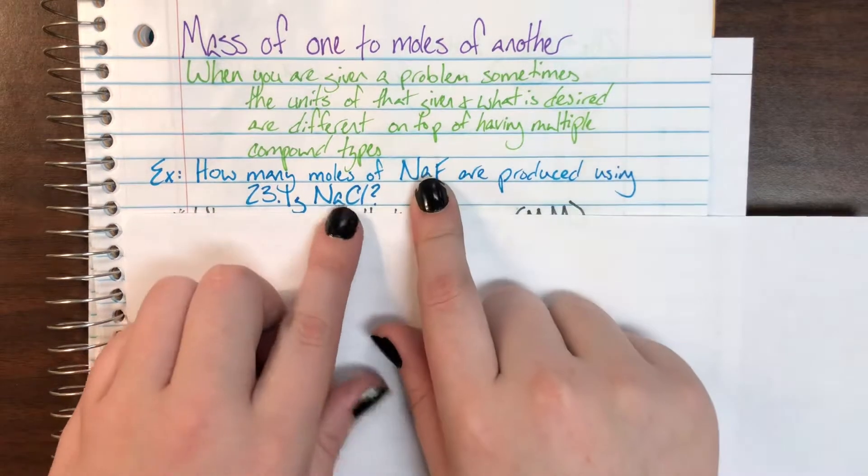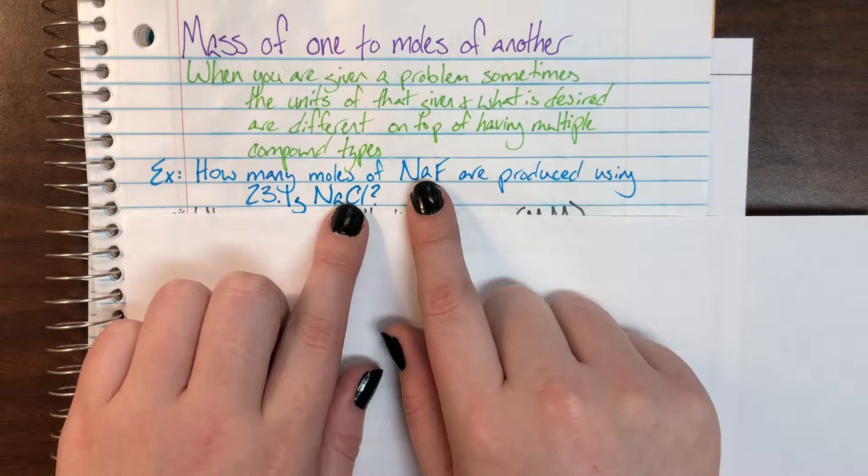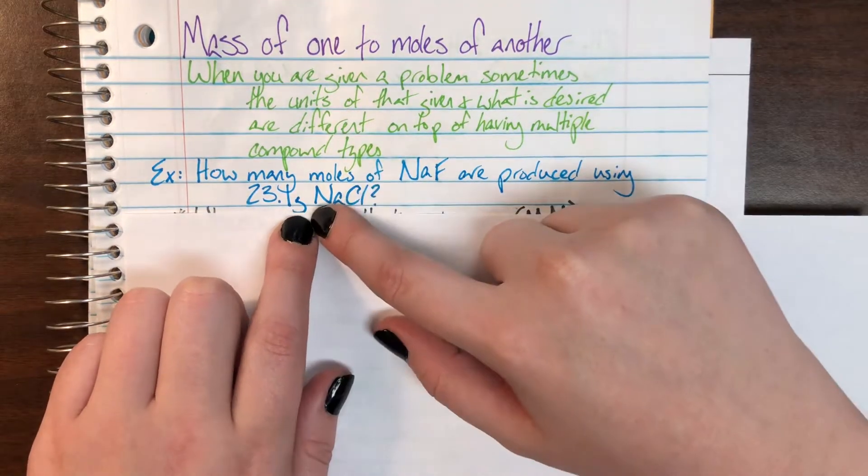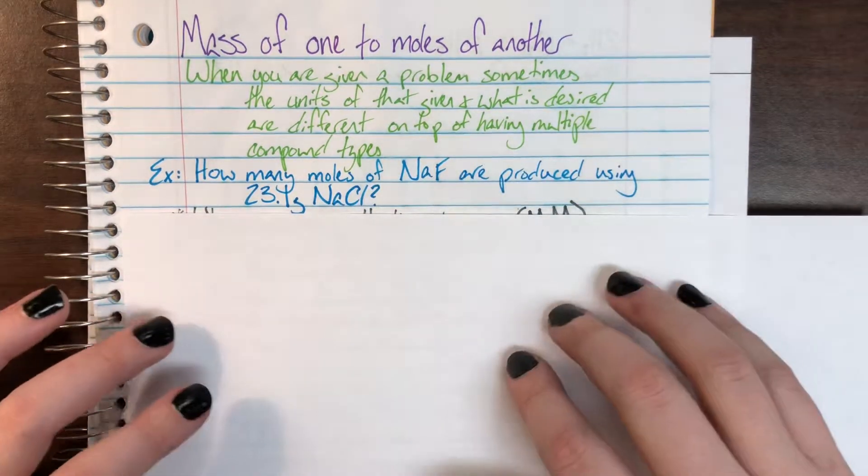Here we see, we have two different compounds here, and we're also given a different unit than what we wanted. That means we have to go through multiple steps.